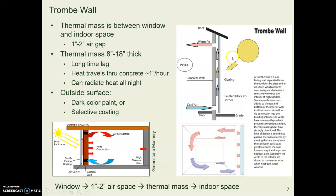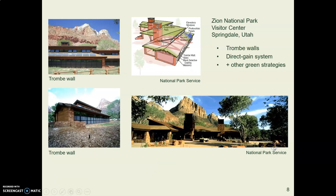There is always a gap of one to two inches between the glass and the thermal mass. Here's another view of the Zion National Park Visitor Center. You can see in the lower left there's a wall of windows with a thermal mass behind them, and here are some clerestory windows.